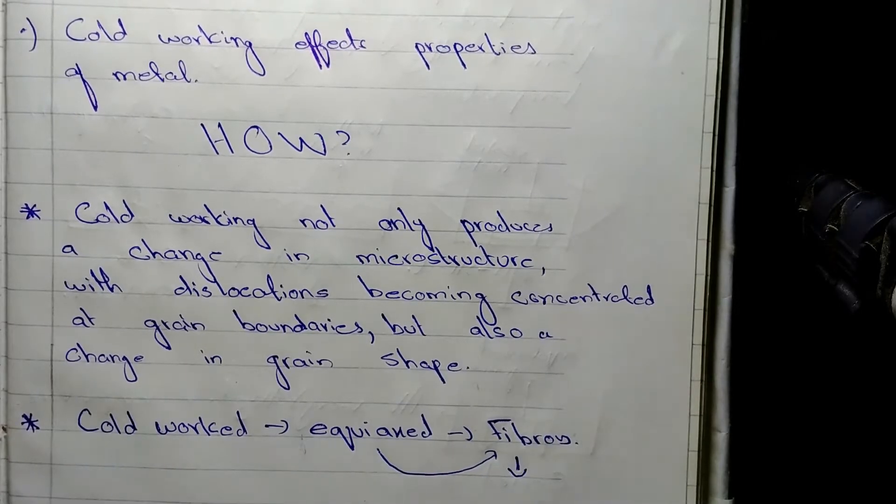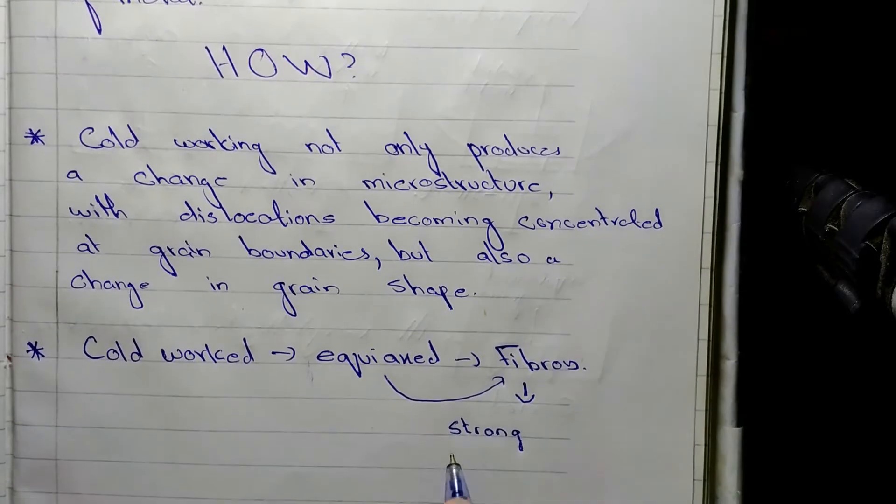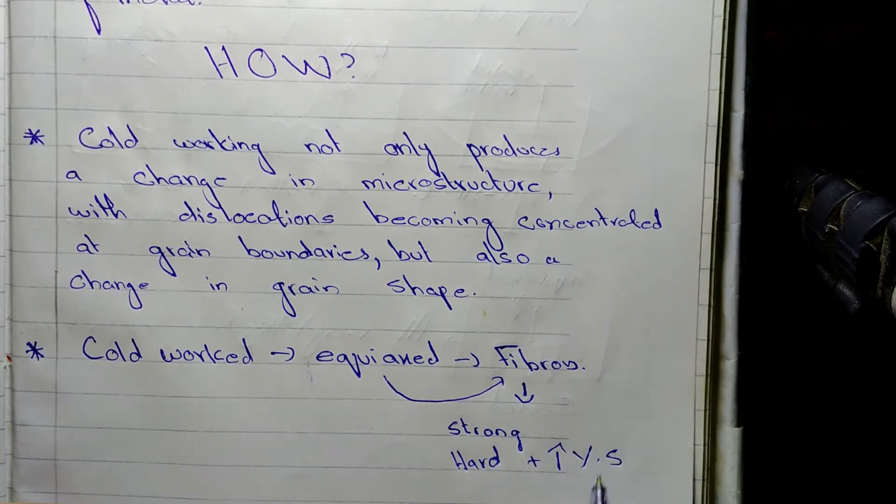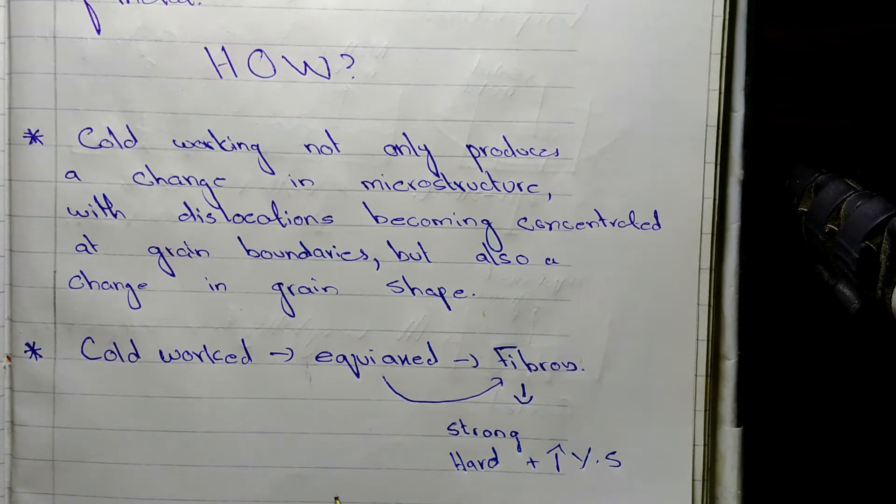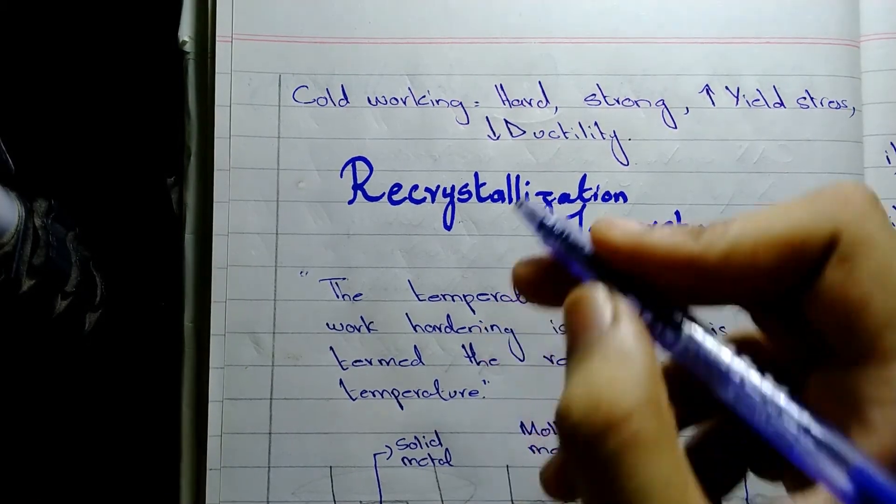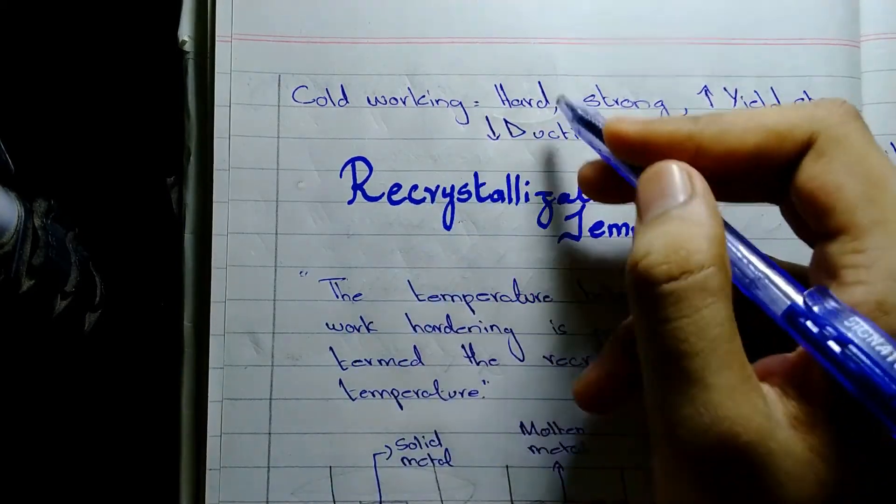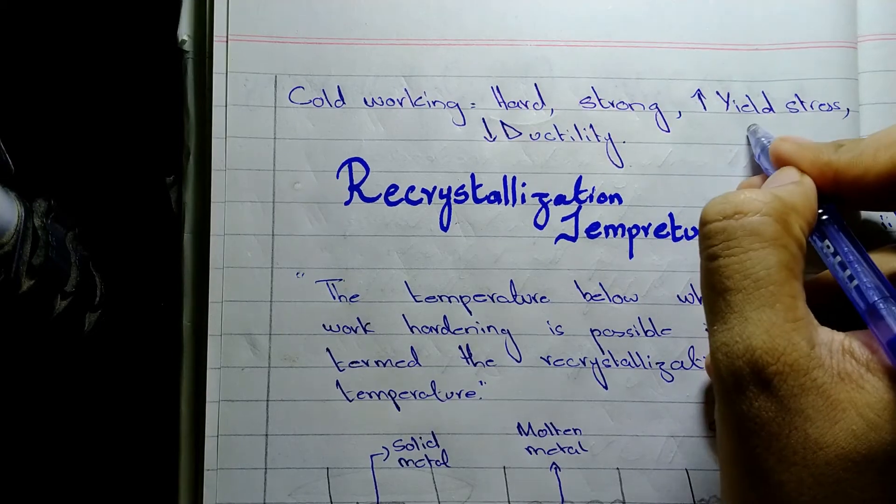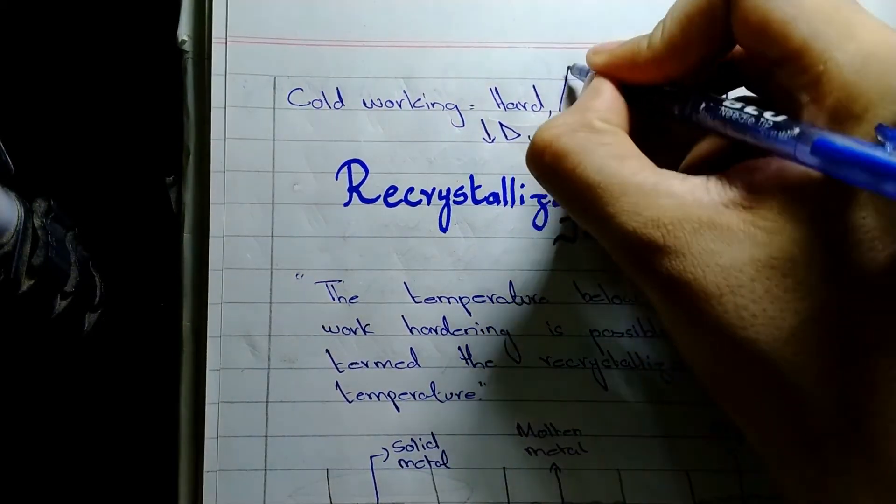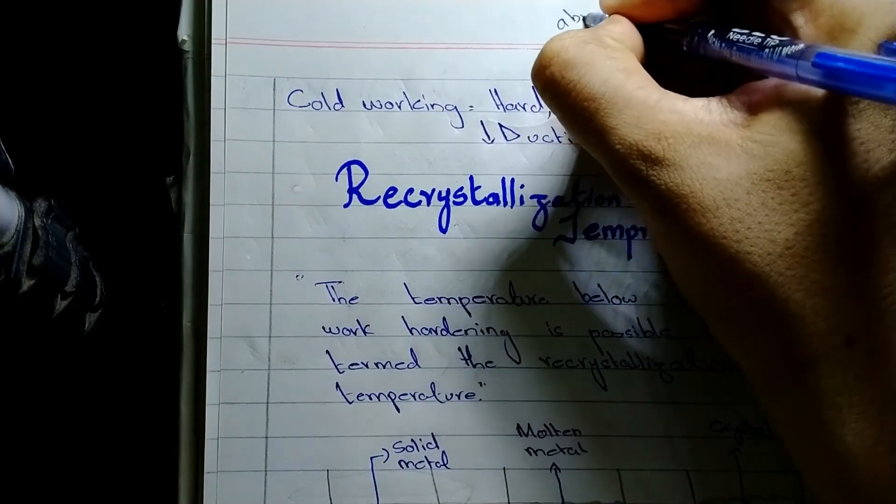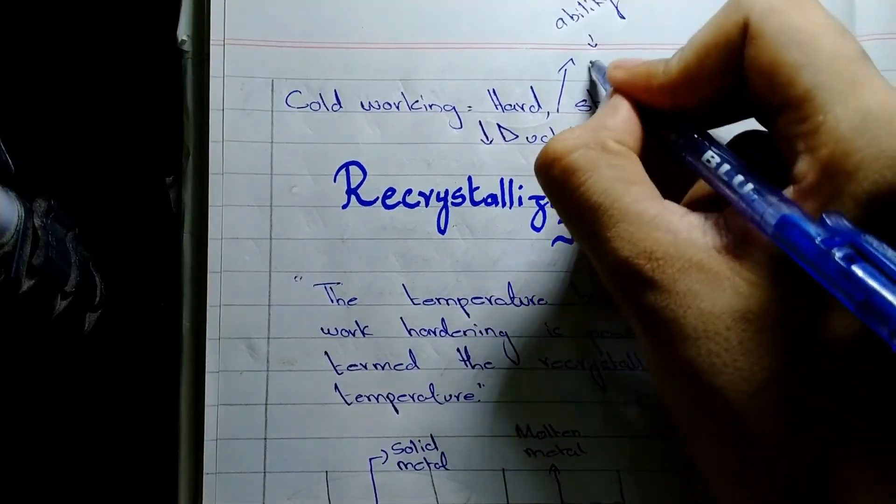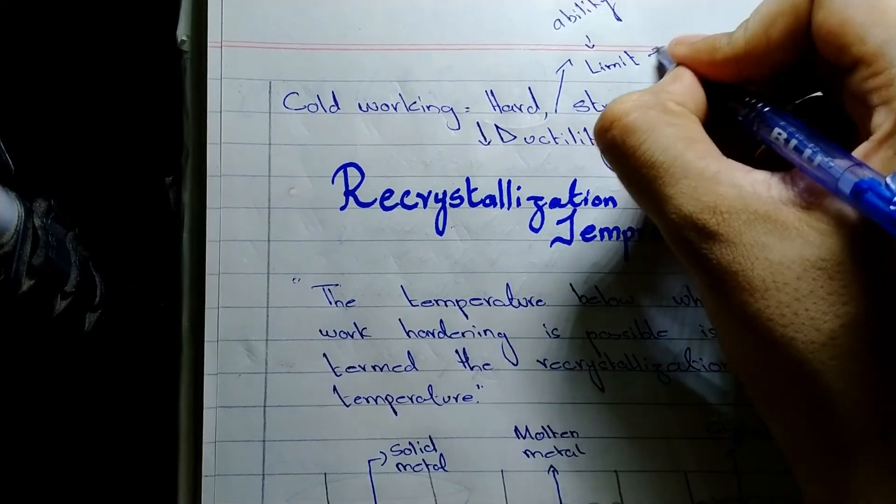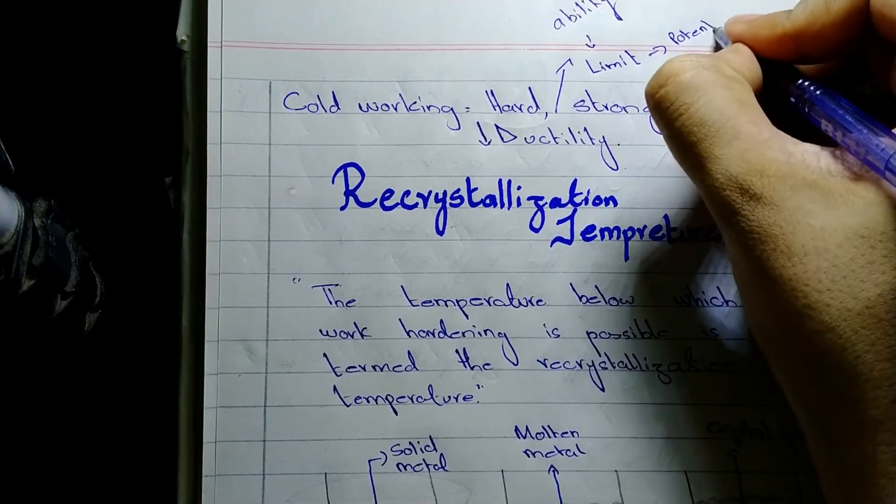So we will have a strong, hard metal with a higher value of ductility plus a metal with higher yield stress. That is how cold working affects the physical and mechanical properties of a metal. So now what we conclude from the last part is cold work metal is hard, strong with higher values of yield stress and the lower value of ductility. Why? Because ductility is the ability, as I mentioned earlier, and every ability has its limit. So the potential for more work hardening is reduced.